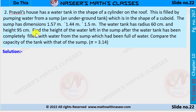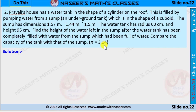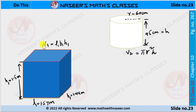of 95 centimeters. Find the height of the water left in the sump after the water tank has been completely filled with water from the sump, which had been full of water. Compare the capacity of the tank with that of the sump. Use pi equal to 3.14. From the given data, we can draw the figure like this.